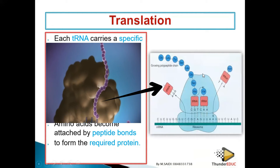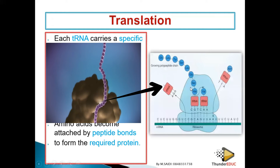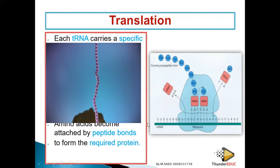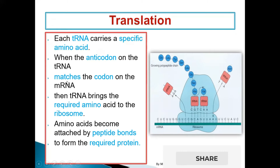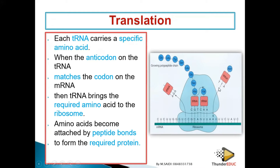Amino acids become attached by peptide bonds to form the required proteins. Each transfer RNA carries a specific amino acid — it cannot carry another amino acid. When the anticodons match with the codons — for example, T goes with A, and A goes with T — they match like that.